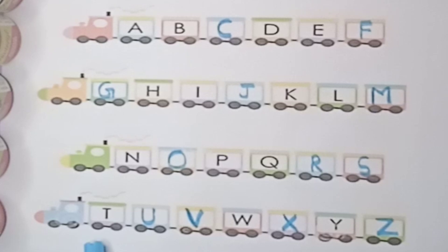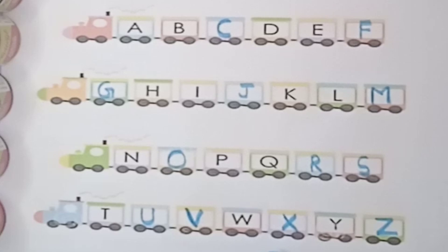S for sun, T for tiger, U for umbrella, V for violet, W for watch, X for x-ray, Y for yard, Z for zebra.